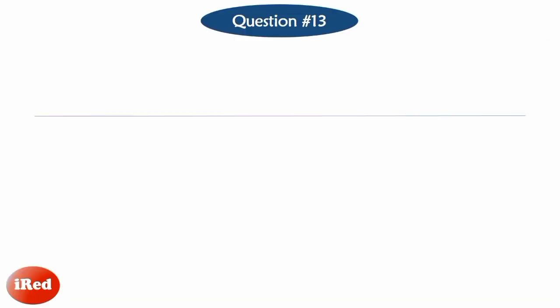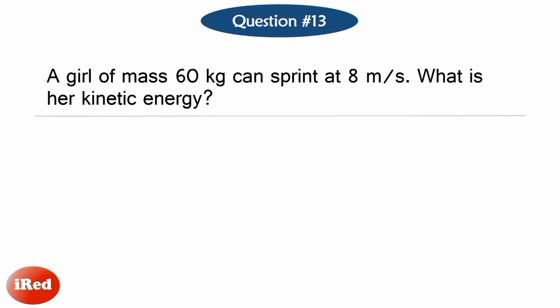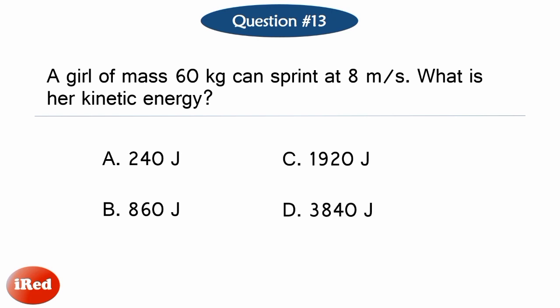Number 13. A girl of mass 60 kilograms can sprint at 8 meters per second. What is her kinetic energy? Letter A, 240 joules. Letter B, 860 joules. Letter C, 1,920 joules. Letter D, 3,840 joules.